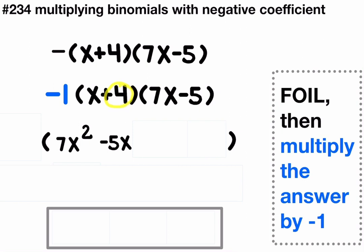Inner, 4 times 7x is 28x. Last, 4 times negative 5 is negative 20.